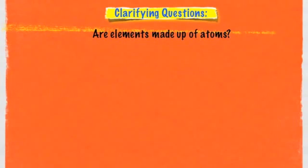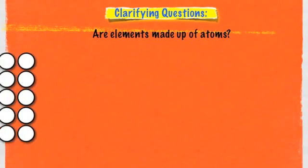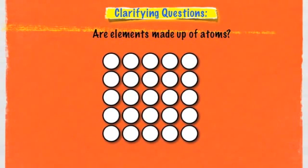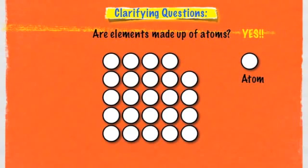Here are a few questions to help clarify the similarities and differences between atoms and elements. The first question is: are elements made up of atoms? Here are the elements we just saw. Is this element made up of atoms? Obviously yes — there's the atom. So yes, elements are made up of atoms.